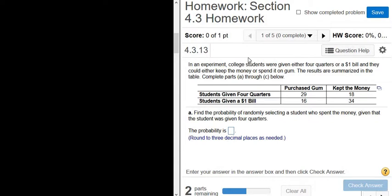In an experiment, college students were given either four quarters or a dollar, and they could either keep the money or spend it on gum. So we have the results here in this table. For example, here it says students given four quarters, and so 29 of them purchased gum, and then 18 of them kept the money. Whereas here we have students given a $1 bill, 16 of them purchased gum, and then 34 of them kept the money.